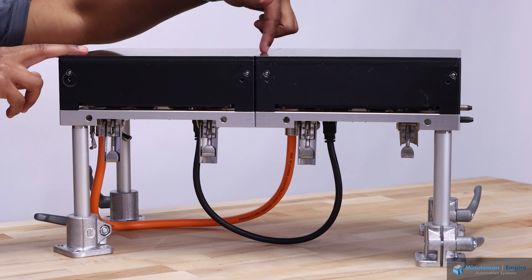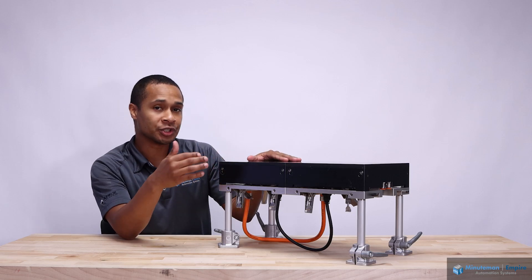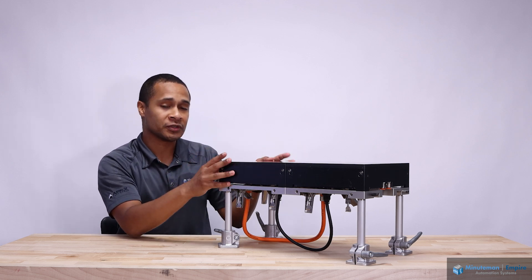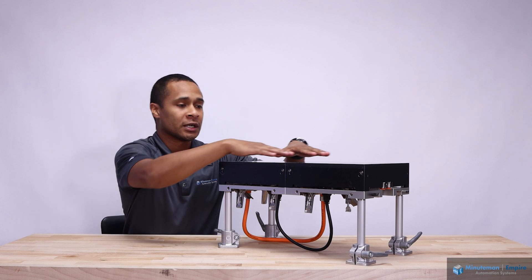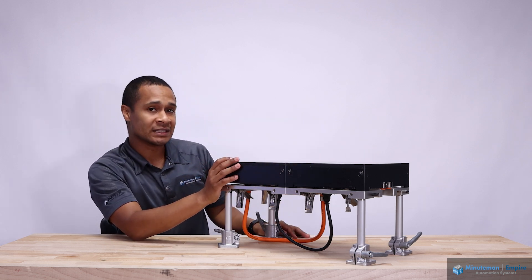You'll notice there's a seam right here that's always going to be there. If your application was extremely hygienic or you want a more clean look you can put a skin over this of stainless steel or any non-ferrous material that will help cover all that and eliminate those seams making this a very nice clean design.